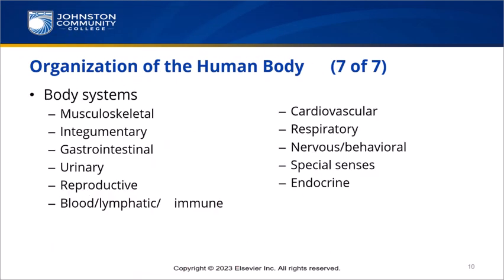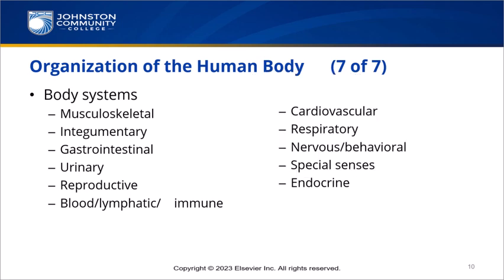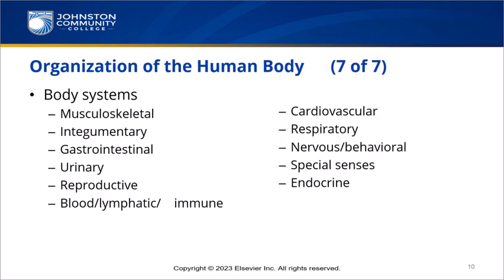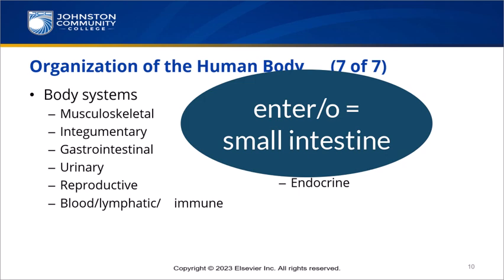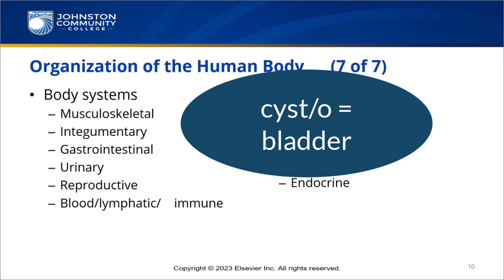Organs are parts of body systems. The musculoskeletal system serves to support the body, protect internal organs, and help move the body. A combining form for this area might be costo, which means ribs. The integumentary system is that of the skin; its function is to cover and protect the body from disease — combining form dermato means skin. The gastrointestinal system is responsible for nourishing the body; combining form entero means small intestine. The urinary system is key in the elimination of nitrogenous waste; combining form cysto means bladder.